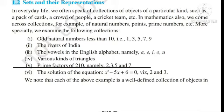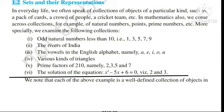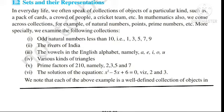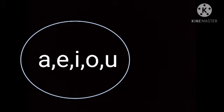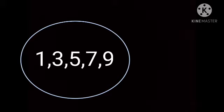In mathematics we also come across collections of objects, for example natural numbers, points, prime numbers etc. तो आओ हम narration करते हैं — first example: natural numbers less than 10, one three five seven nine। The vowels of the English alphabet namely a, e, i, o, u। Various kinds of triangles। Prime factors of 210 namely two, three, five, and seven। And the solution of equation x² − 5x + 6 = 0, say two or three।